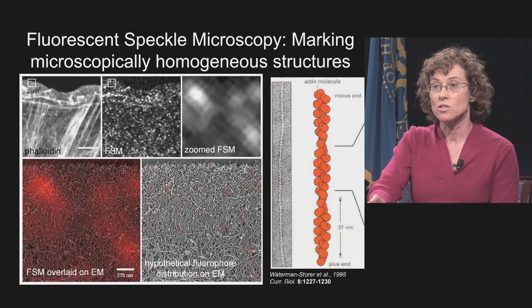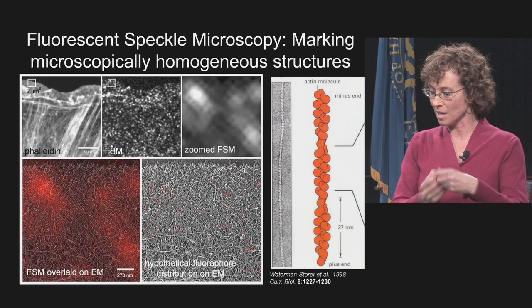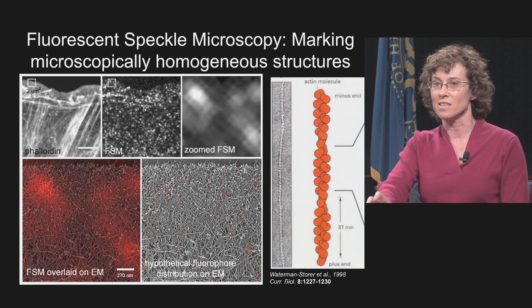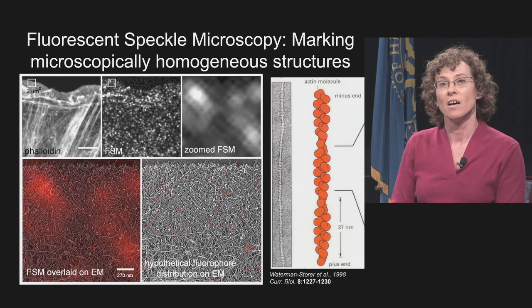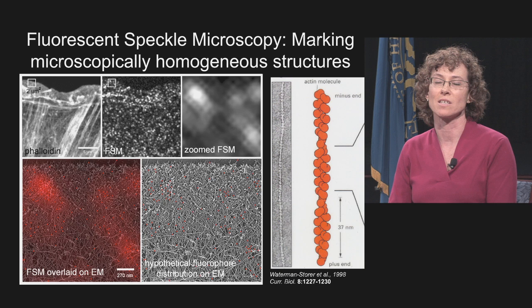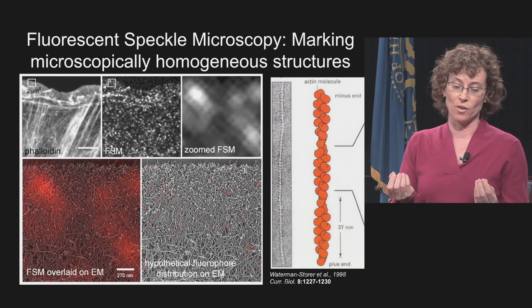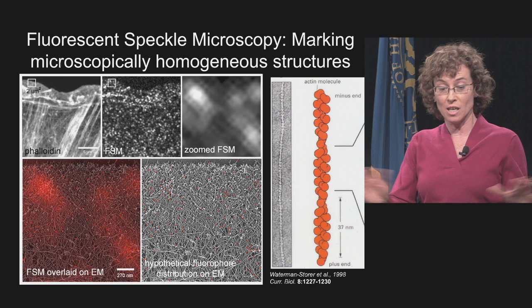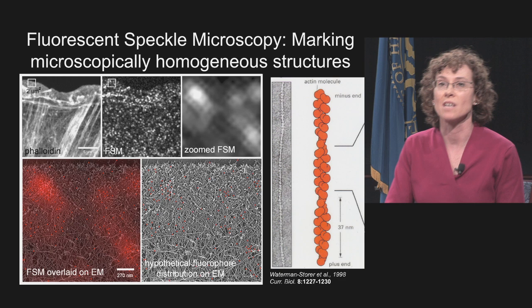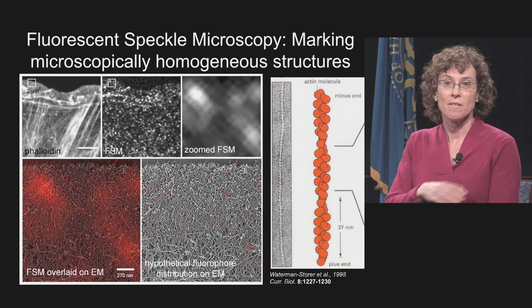If you take an 8-nanometer fluorescent actin molecule and assemble a string of them into a structure, at high filament density what you see is basically an evenly fluorescent label along the leading edge of the migrating cell. The problem is that molecules assembling and disassembling into those actin filaments are below the resolution limit, so the image looks evenly fluorescent in spite of the dynamics going on. We've developed speckle microscopy to reveal these dynamics.